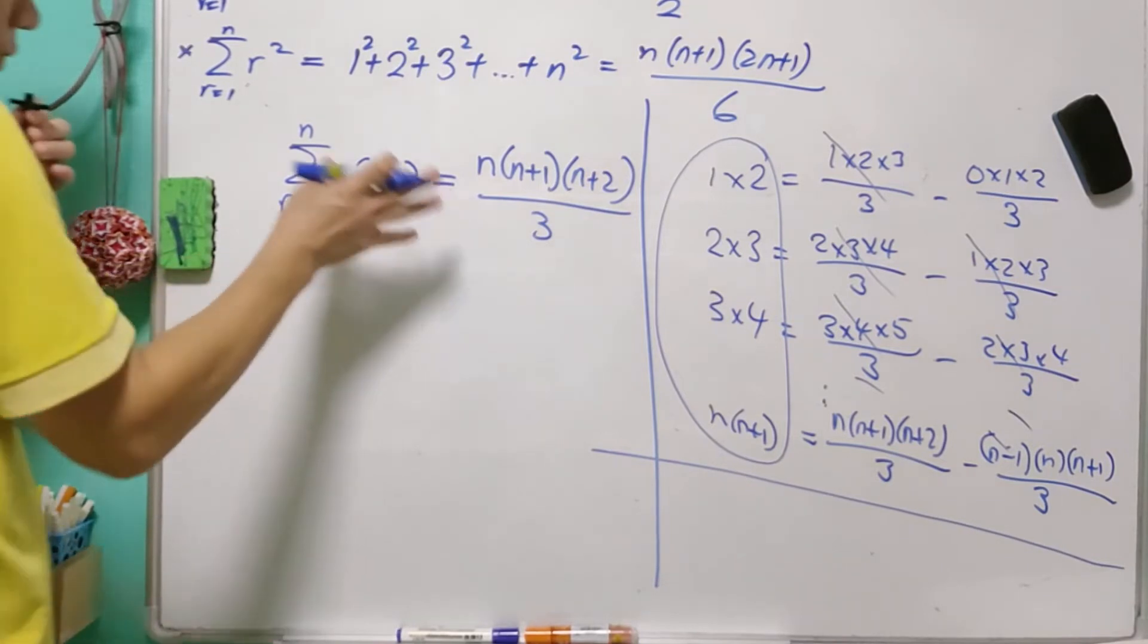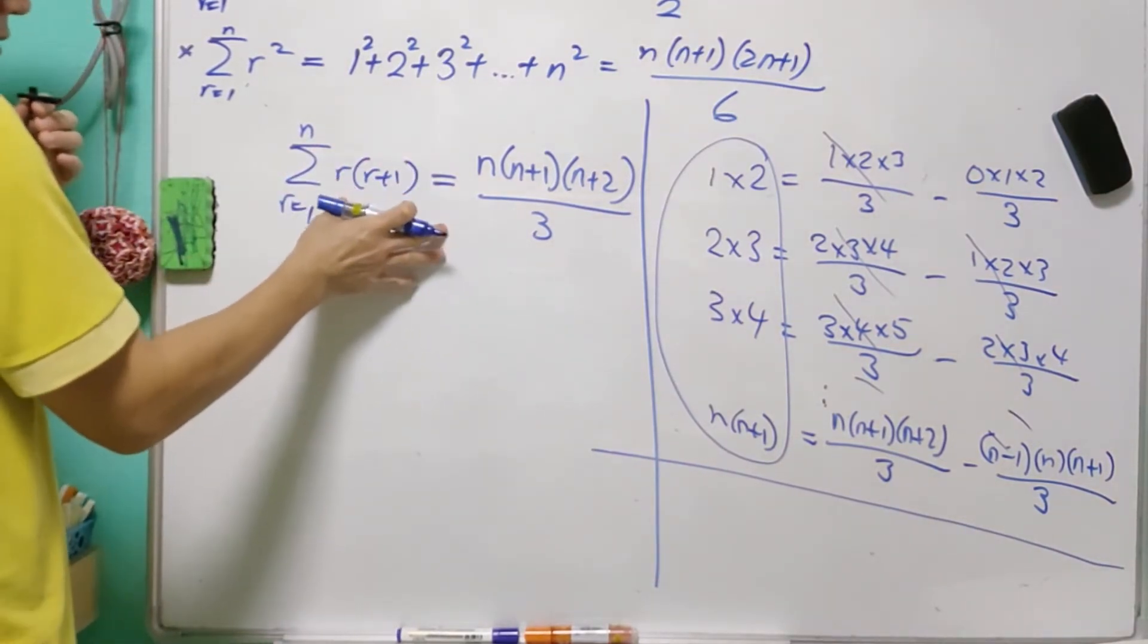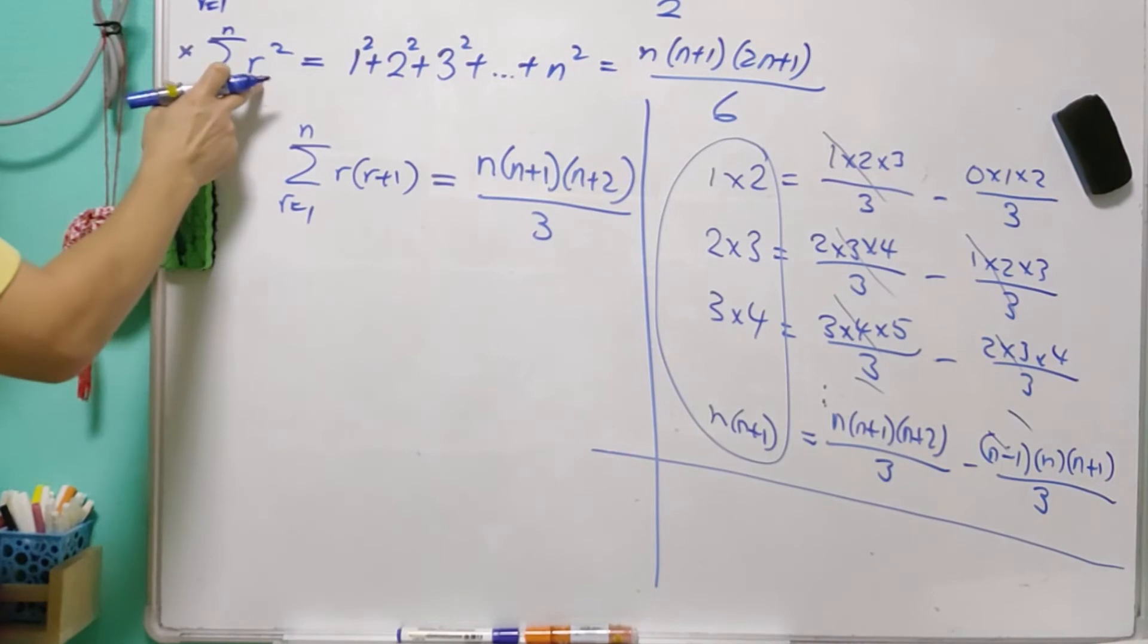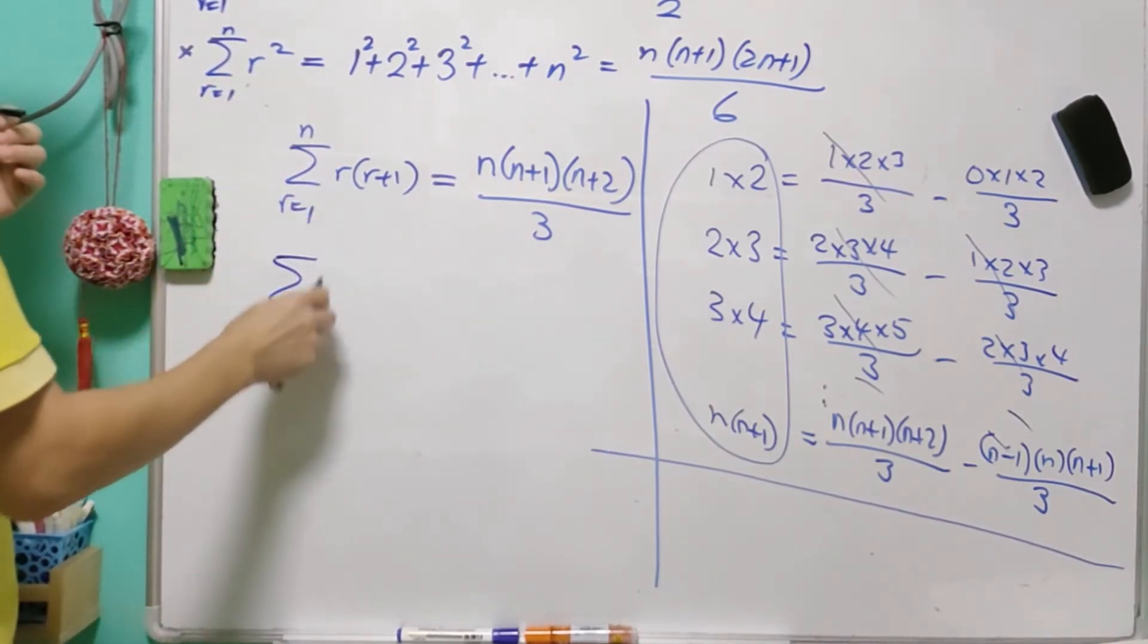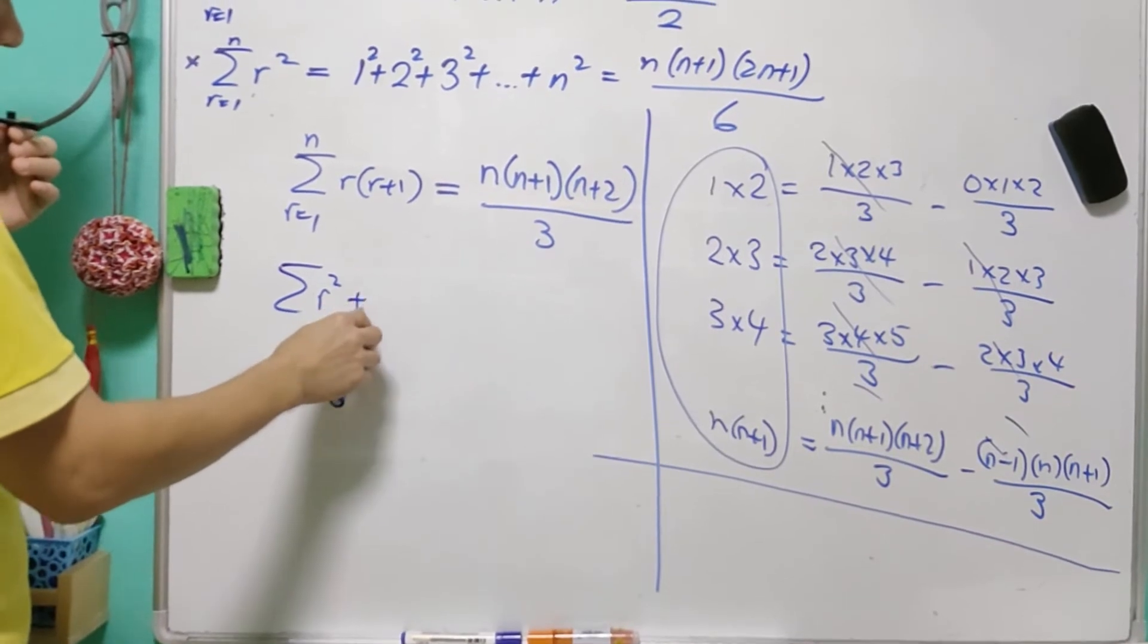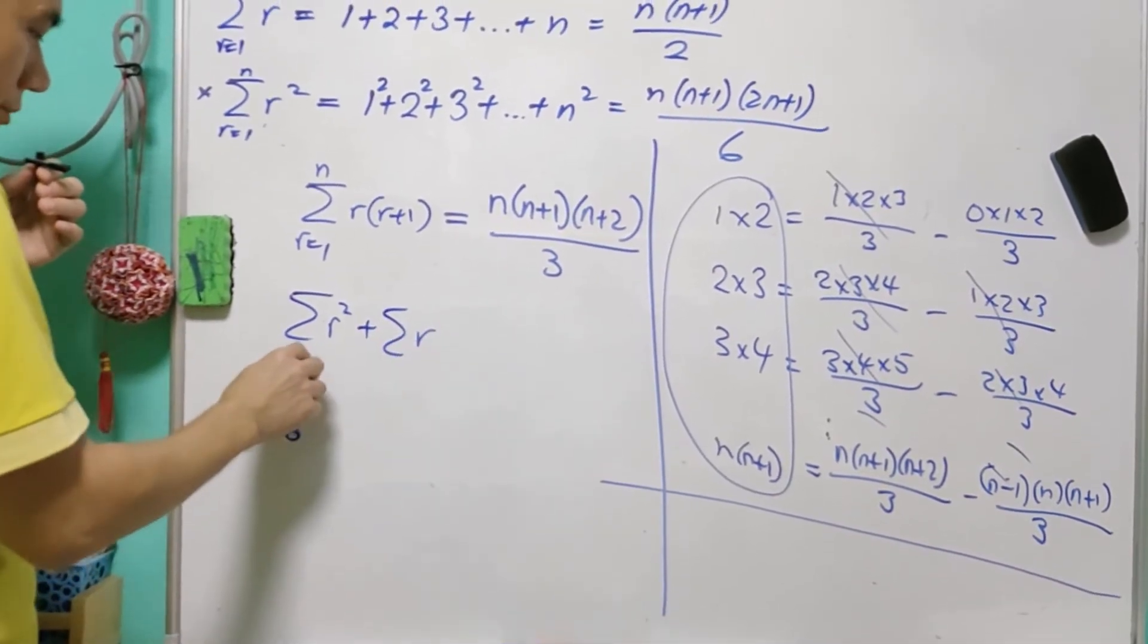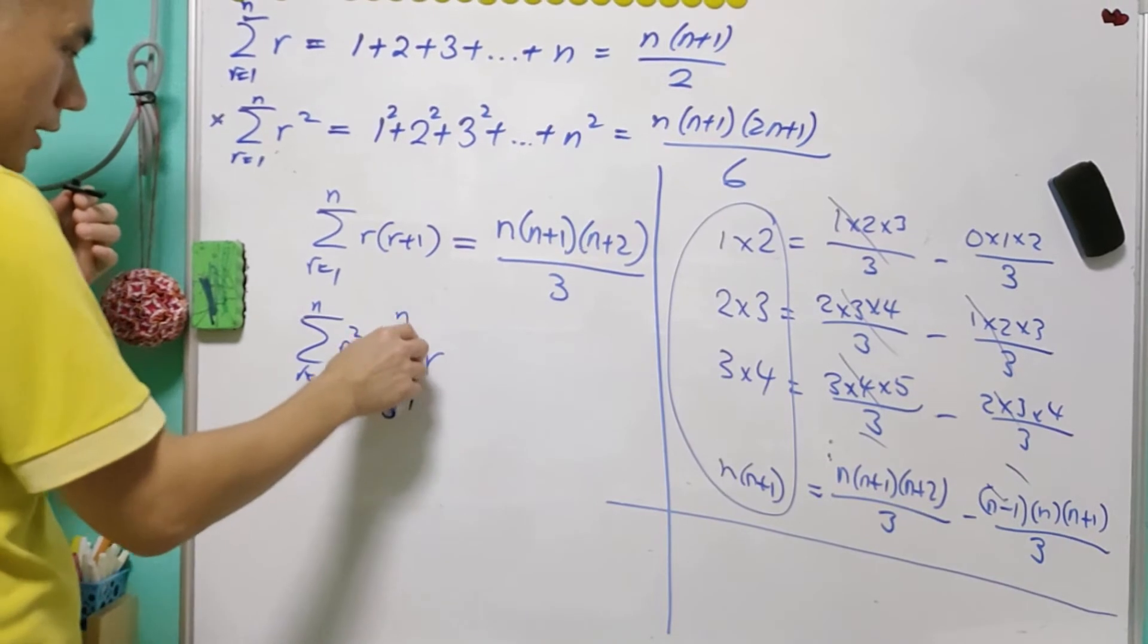So when we know what happens for this summation r(r+1), it is easy for us to get the summation r squared, because this is actually equal to summation r squared plus summation r, from r equals 1 to n, from r equals 1 to n.